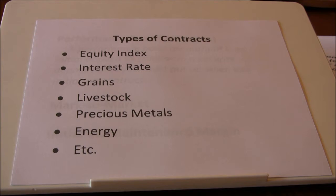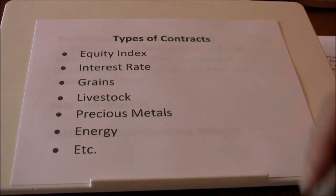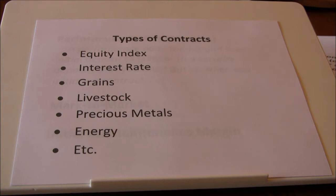In futures markets right now, there are several different types of contracts. For instance, equity index contracts — you can buy futures on the S&P 500, the Dow Jones Industrial Average, the Nikkei average. Lots of different equity indices have futures markets available to trade on them.